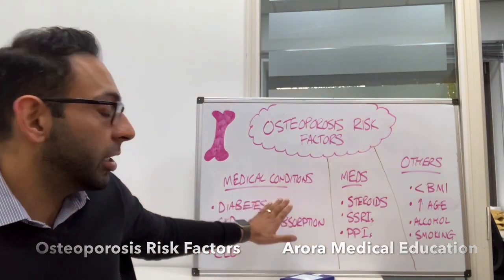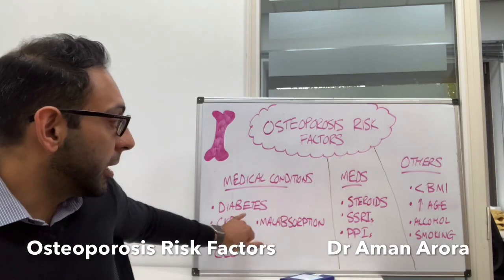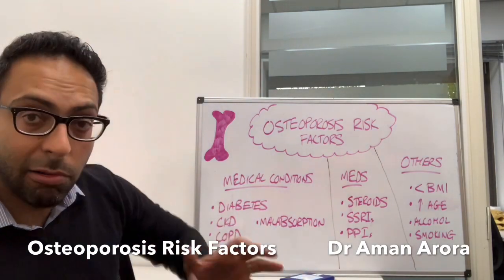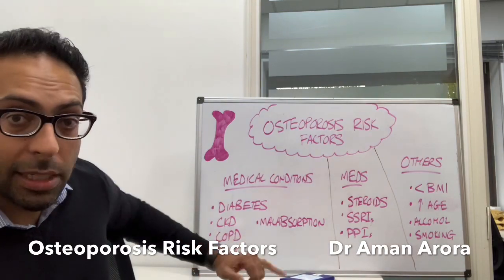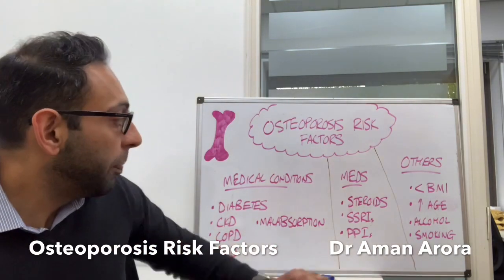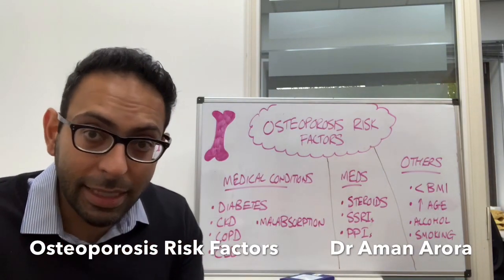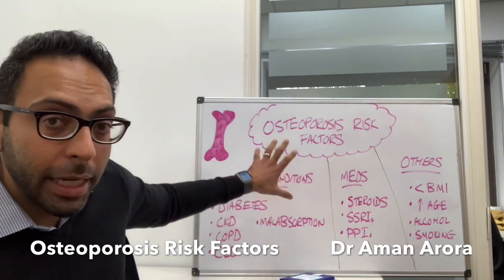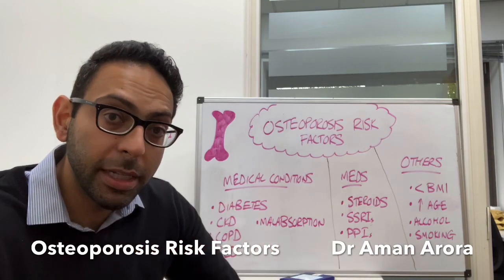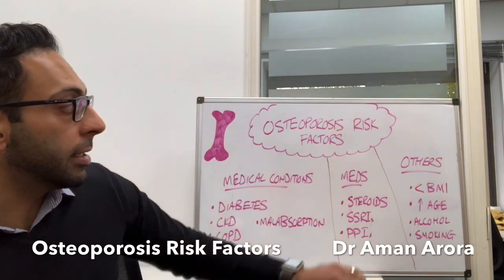Number one: medical conditions. Lots of different medical conditions can put you at higher risk of osteoporosis. Diabetes is the one we all tend to remember. CKD — chronic kidney disease. COPD, so lung conditions. CLD — chronic liver disease. Things like malabsorption, so Crohn's disease, celiac disease. Lots of different underlying medical conditions that you should be looking out for in past medical histories when it comes to exams or role plays.